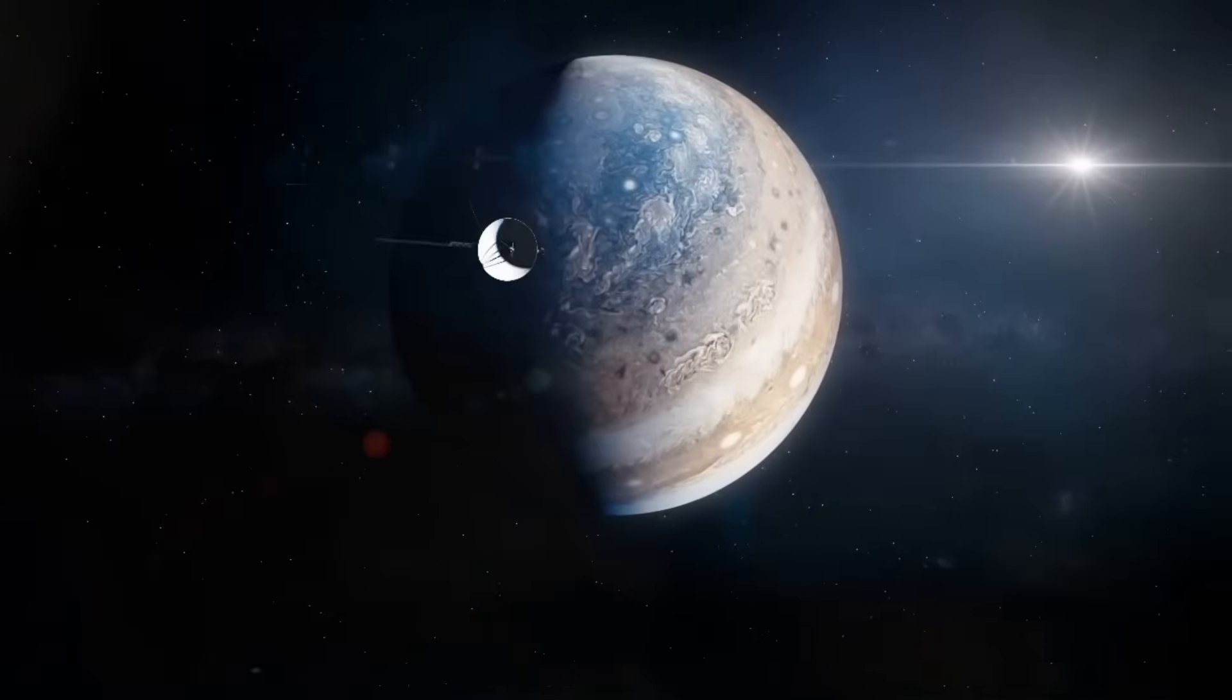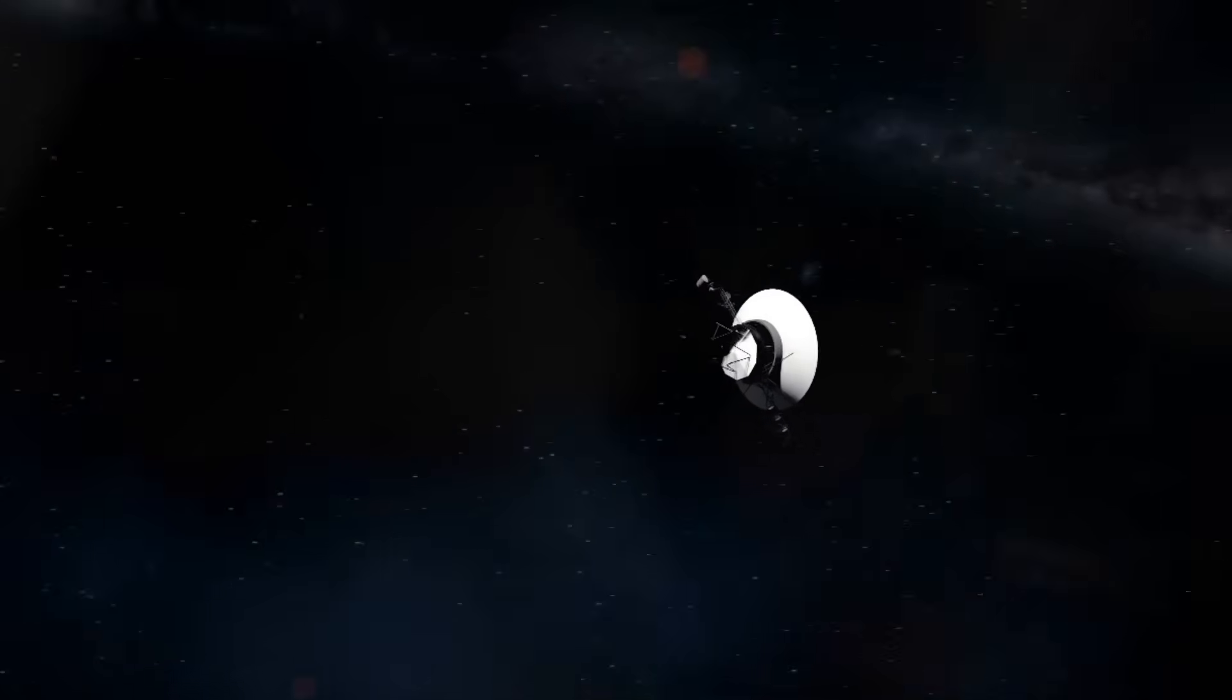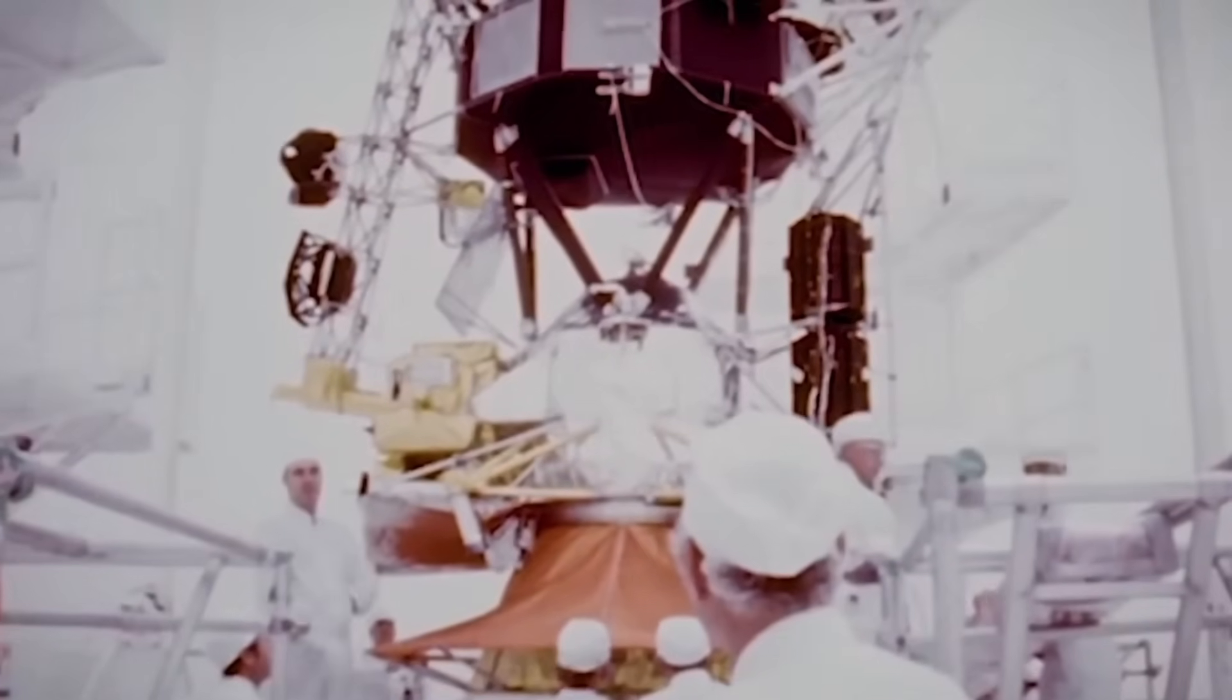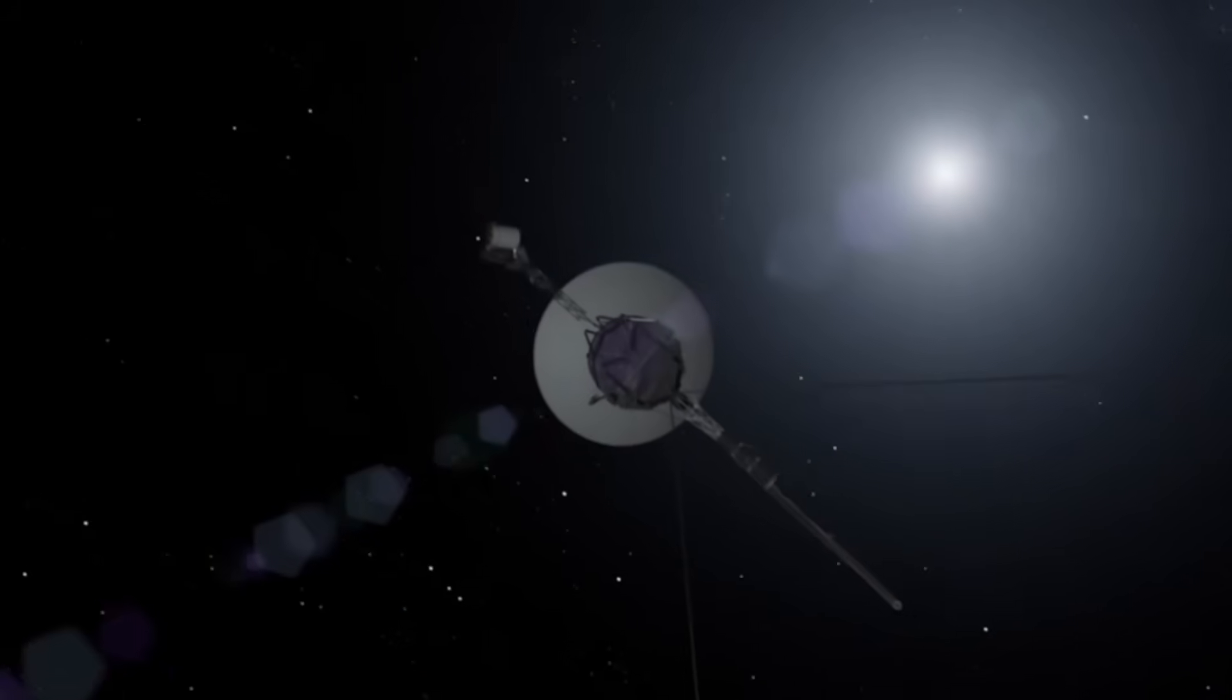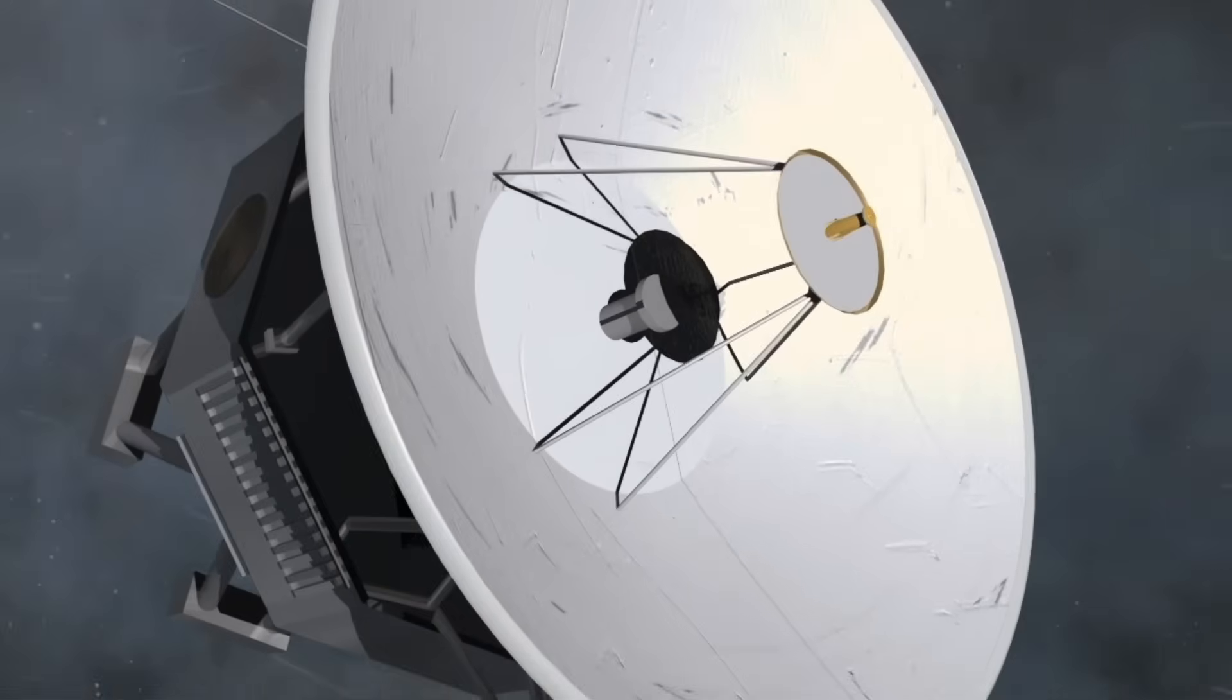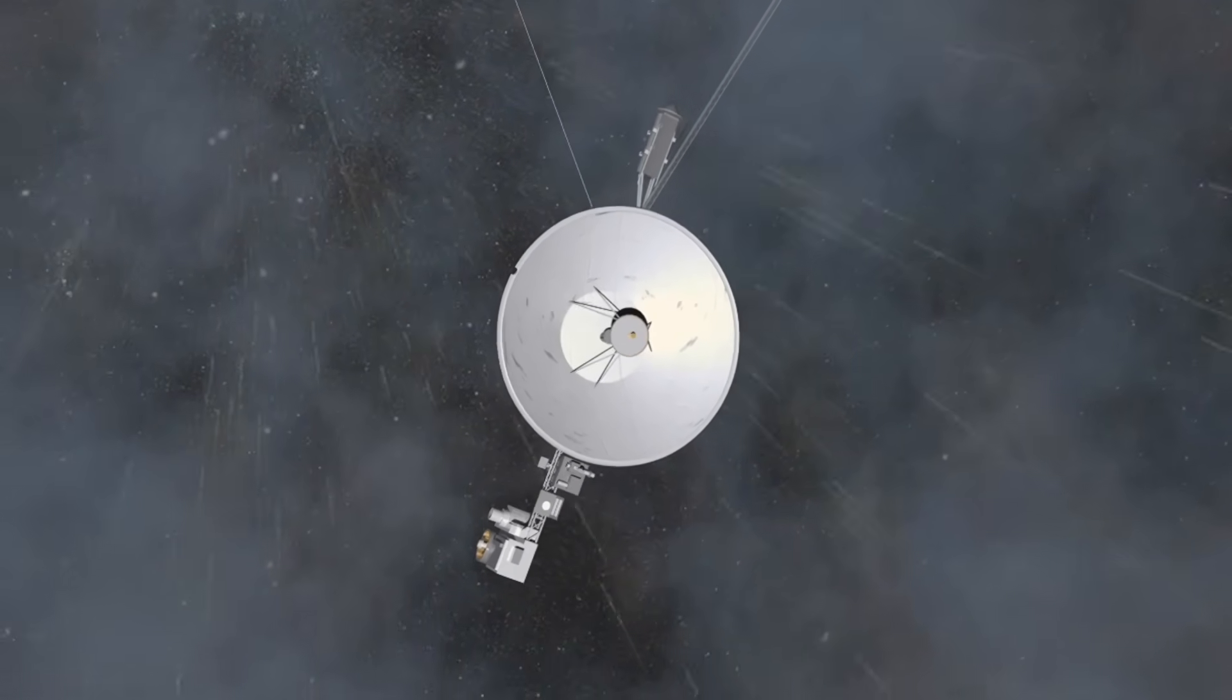Despite the excitement surrounding Voyager 1's readings, significant limitations must be acknowledged. The spacecraft's instruments were designed in the 1970s and have been operating far beyond their intended lifespan. The power supply continues to diminish, with only about 4 watts of power remaining for all scientific instruments combined—less than a refrigerator light bulb. This degradation raises legitimate questions about data reliability.